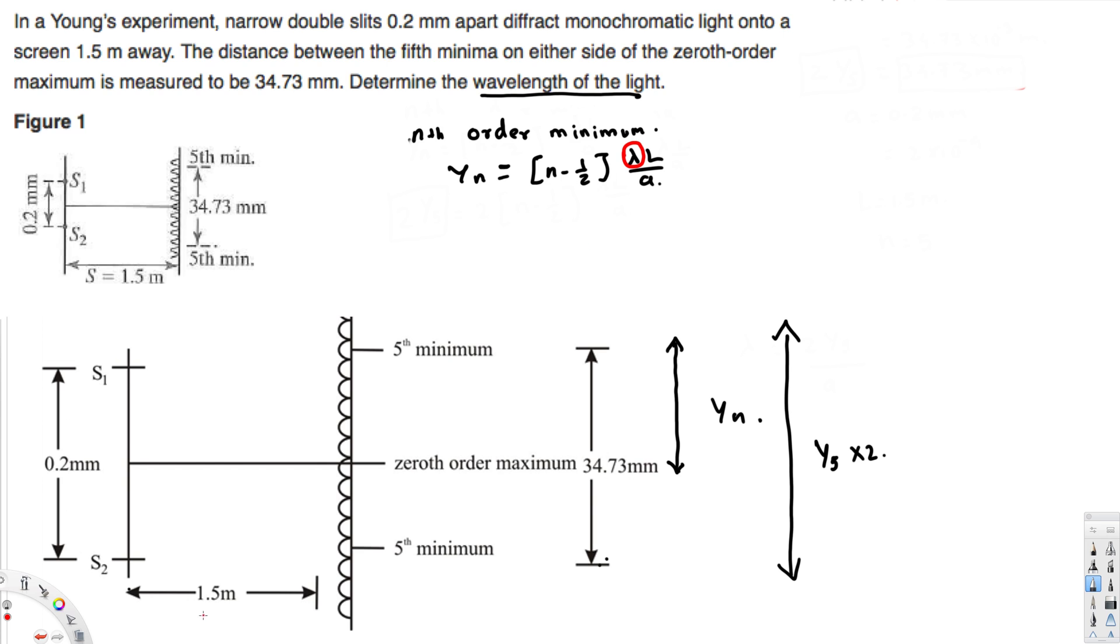And we have this L value, L value is this one, L equals 1.5 meters, and this a value is going to be 0.2 millimeters. And this is fifth order minimum, so n is going to be 5.